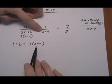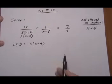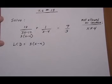If it's already contained there, we're not going to put it in. Same with this guy. 3 already contained, we don't include it. So we're done. The LCD is 3 times x minus 4.